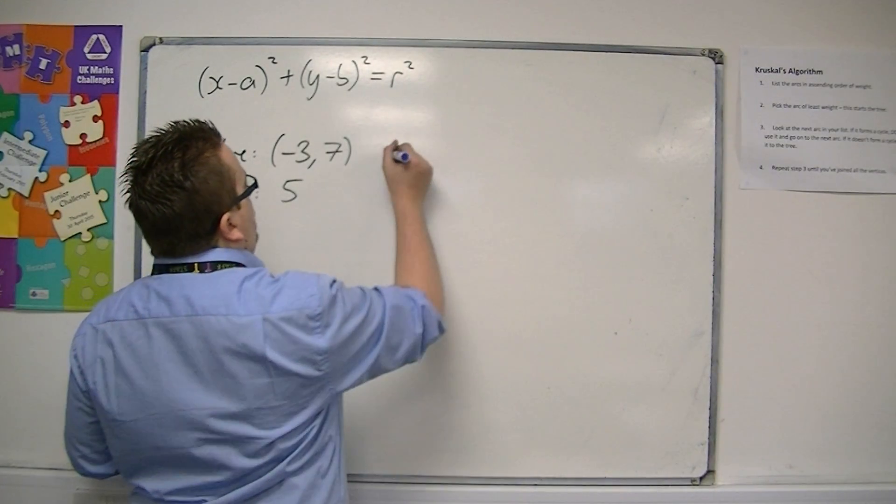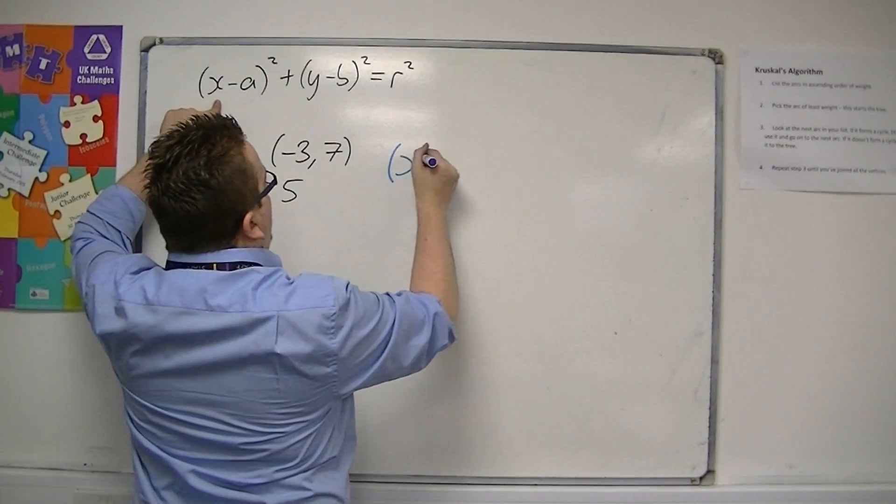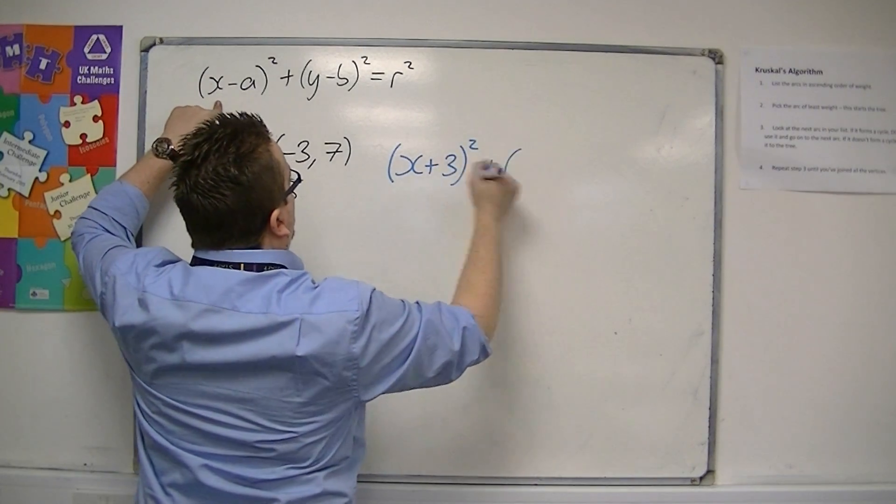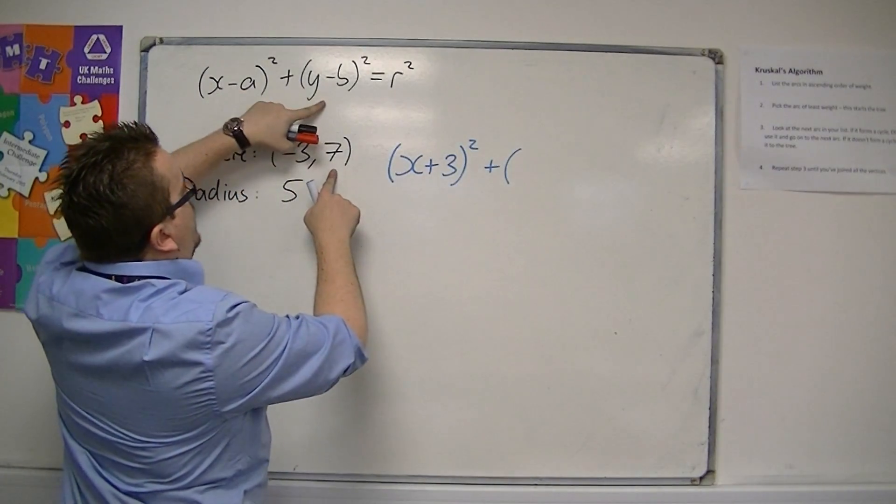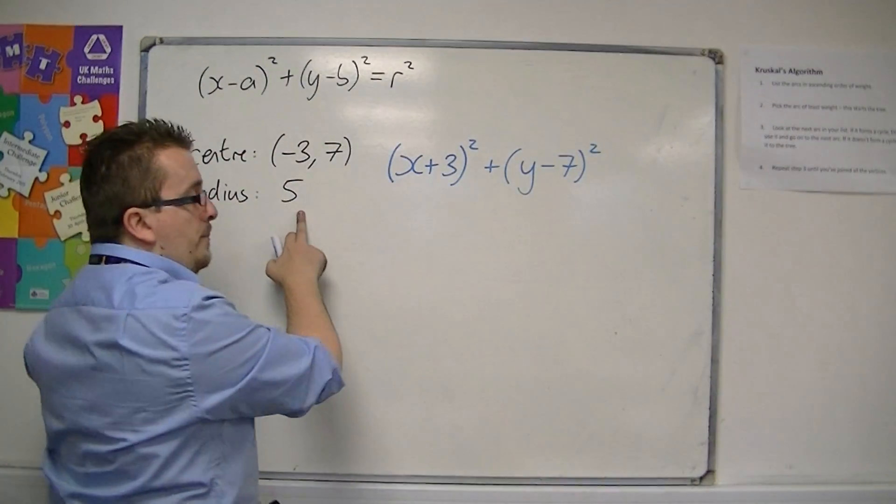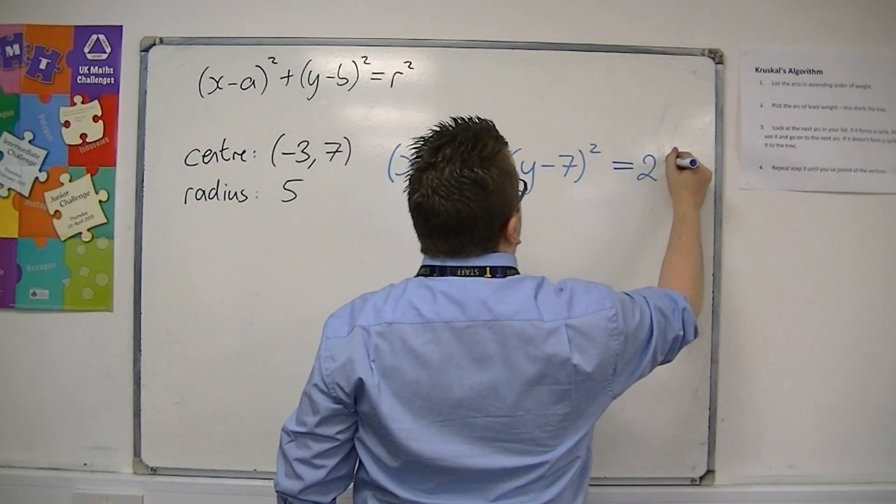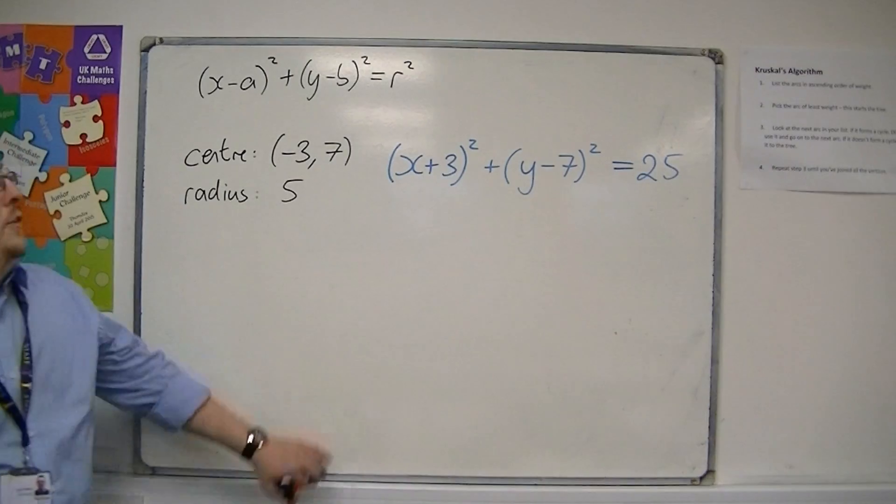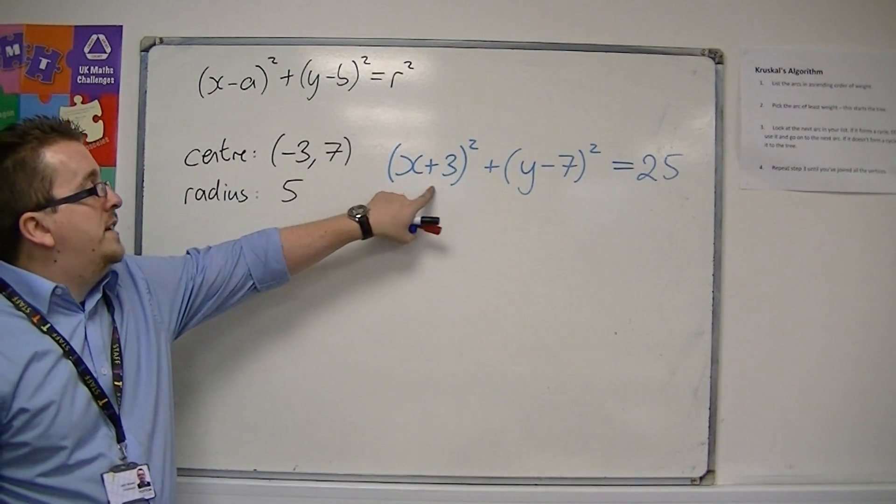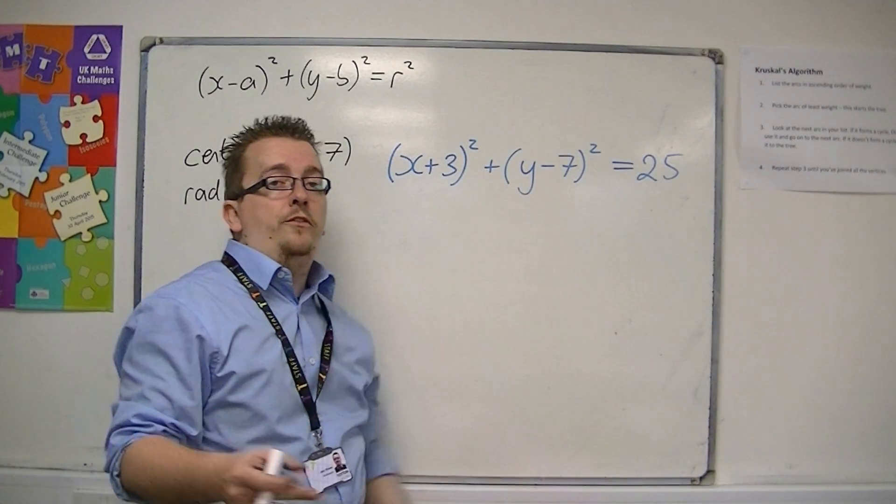If a is -3, then x take away -3 is actually (x + 3)². With b being 7, we get (y - 7)². And with the r value being 5, we get 5² which is 25. So this is the equation of the circle centered at (-3, 7) with radius √25, which is 5.